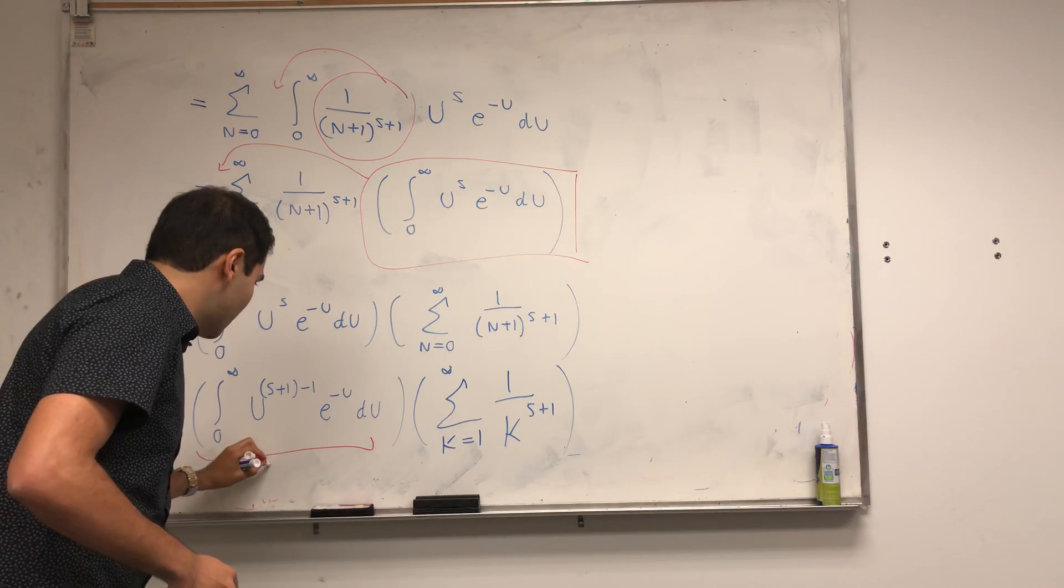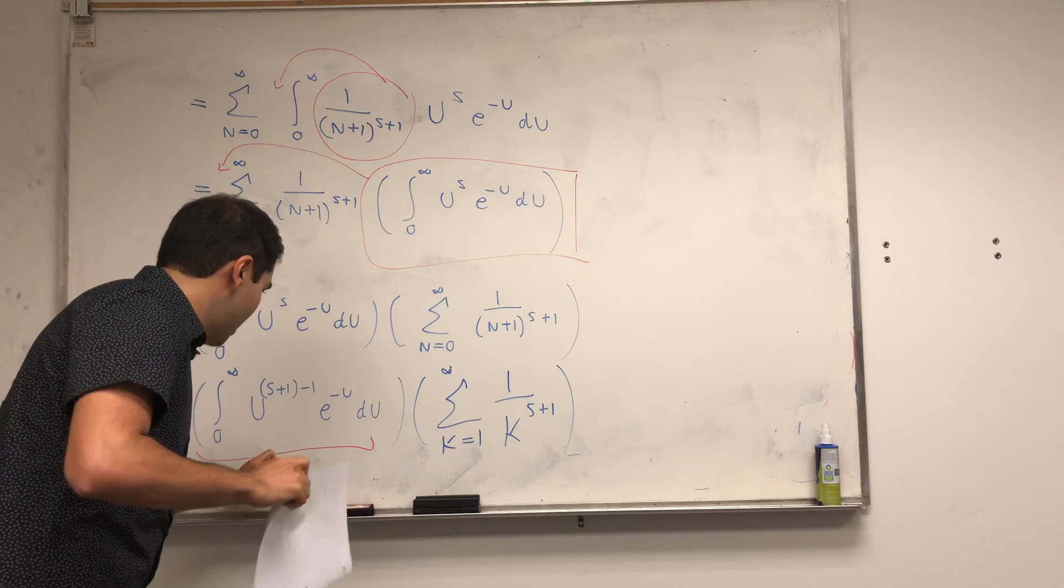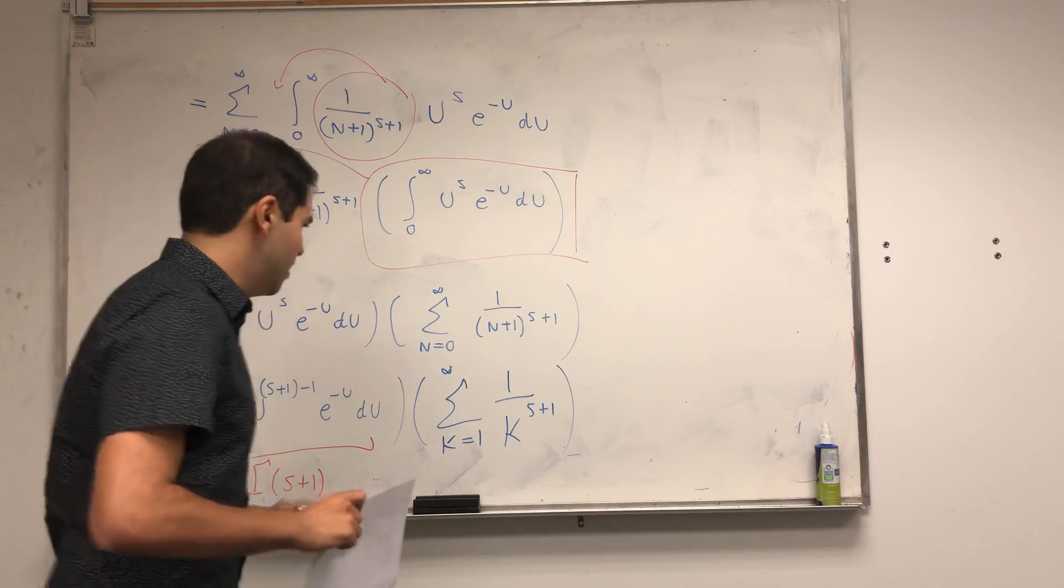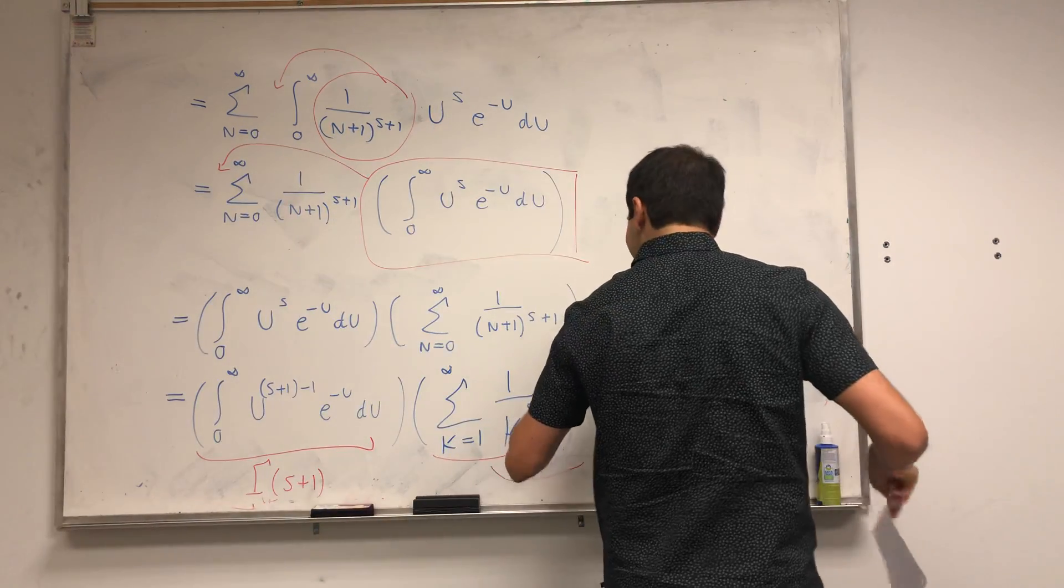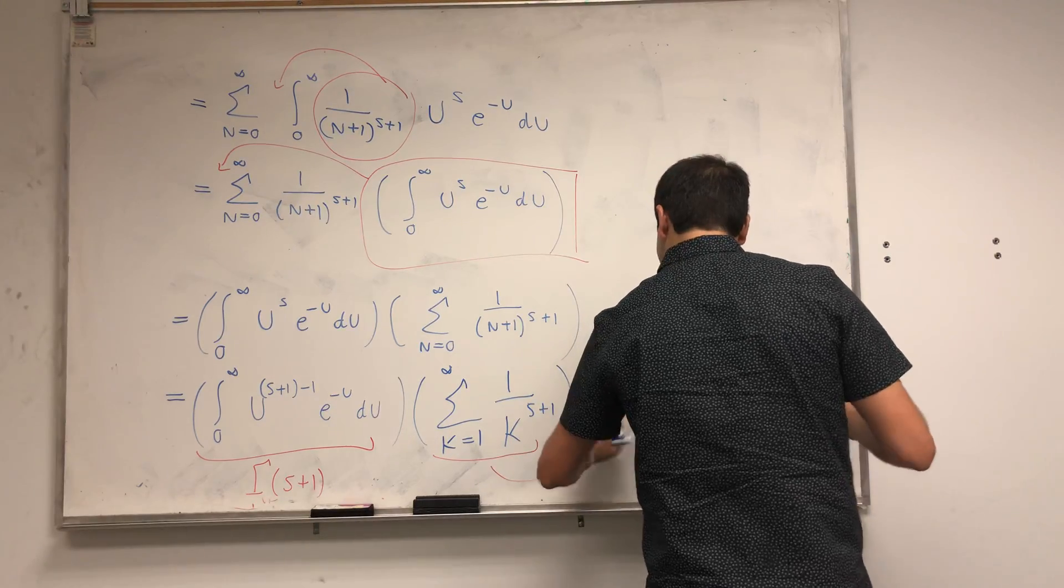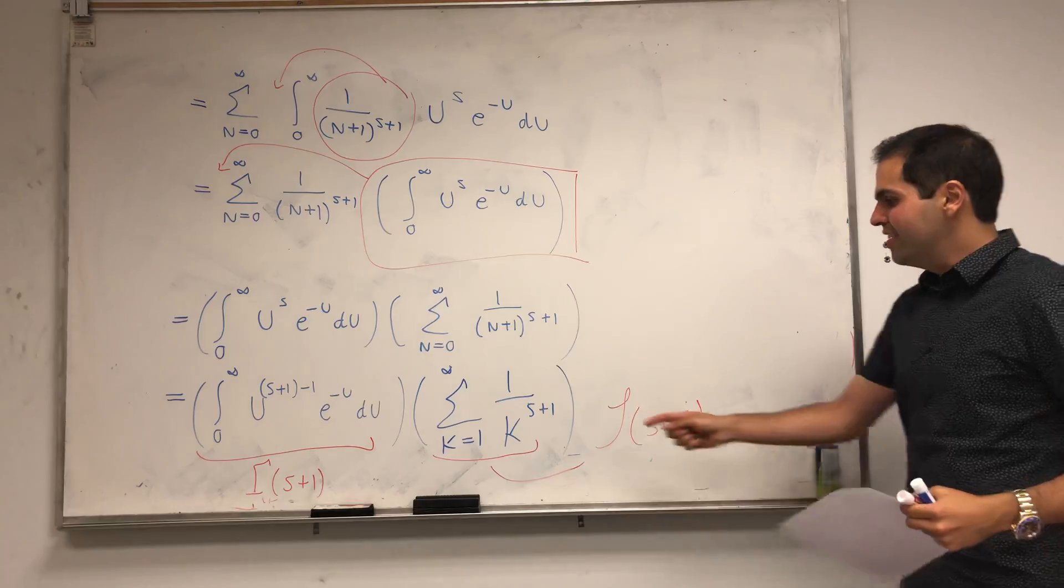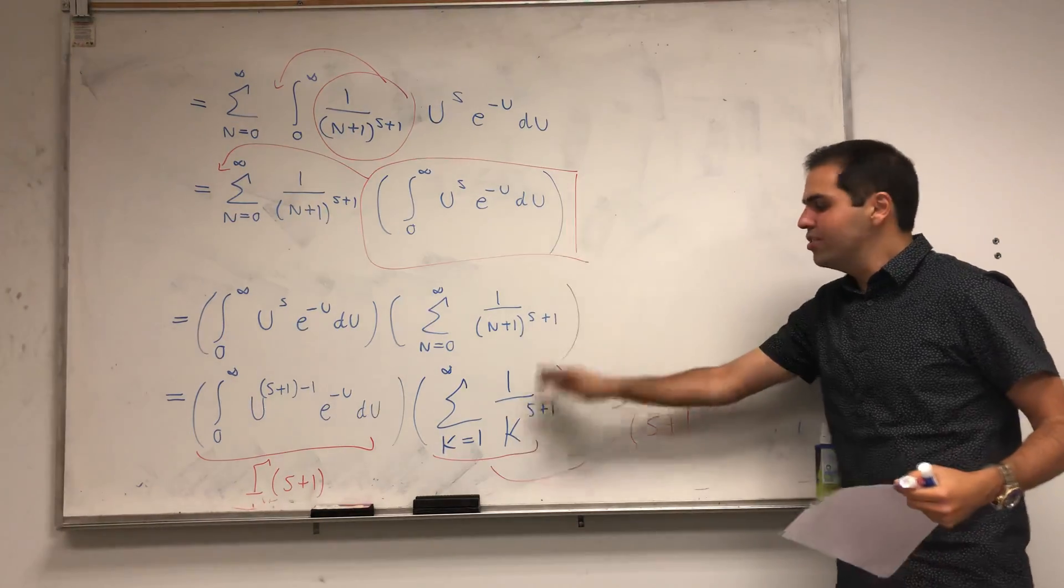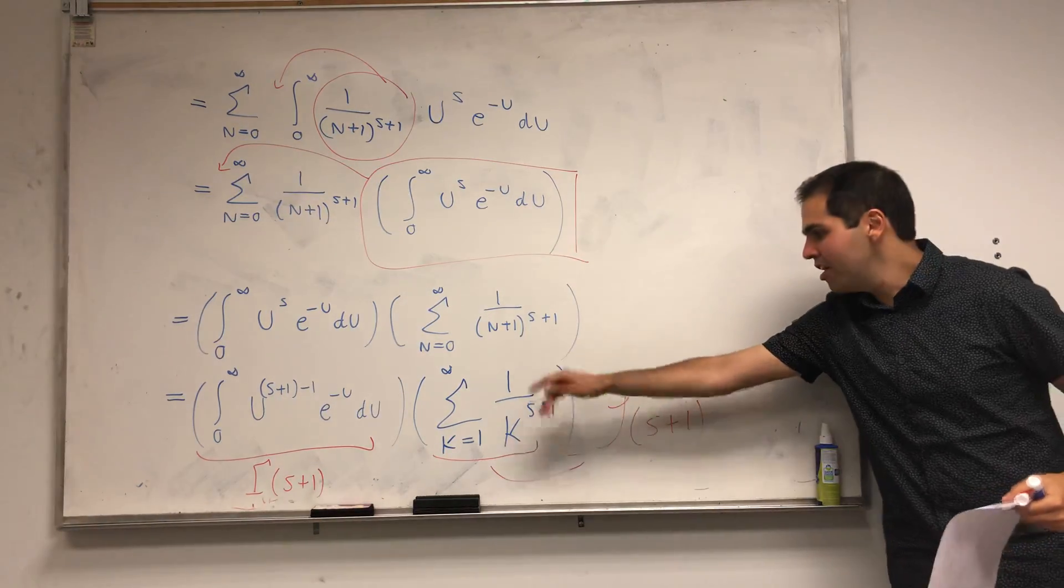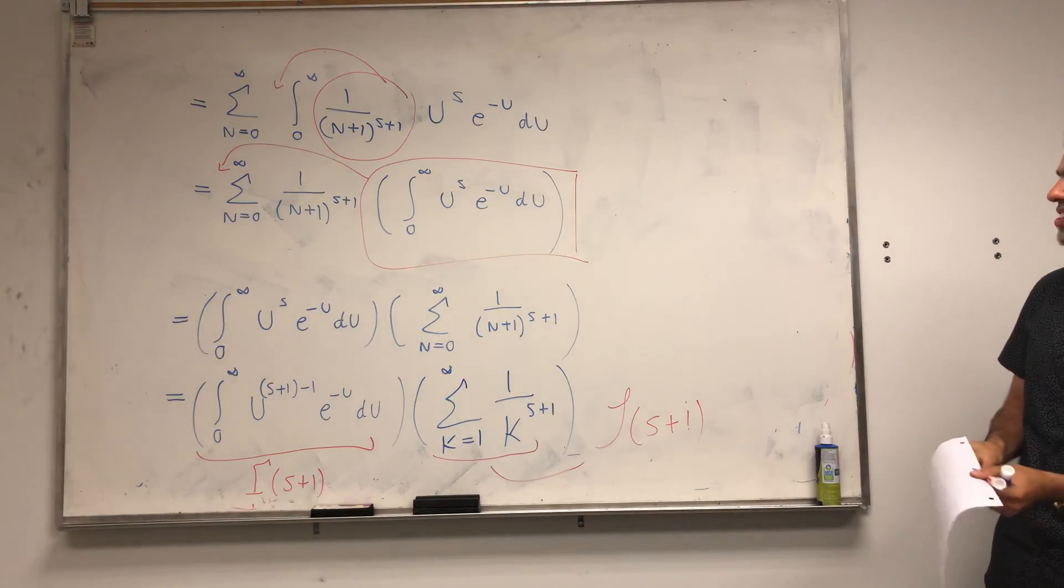And those are functions we are more familiar with. Because this thing, it's called the gamma function at s plus 1. And this thing, it's called the zeta function at s plus 1. Because sum over n to some real number or complex number to the s plus 1, that's the zeta function.